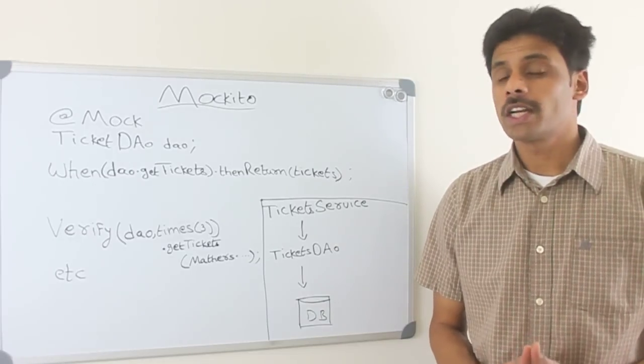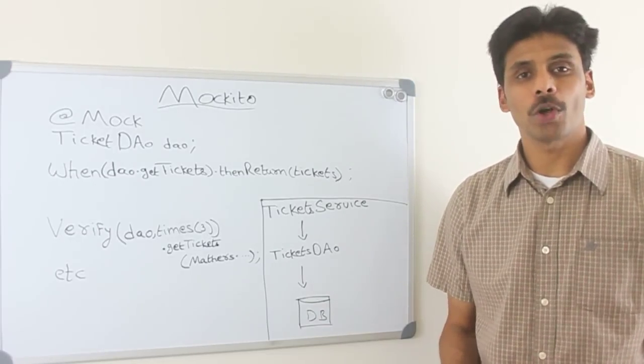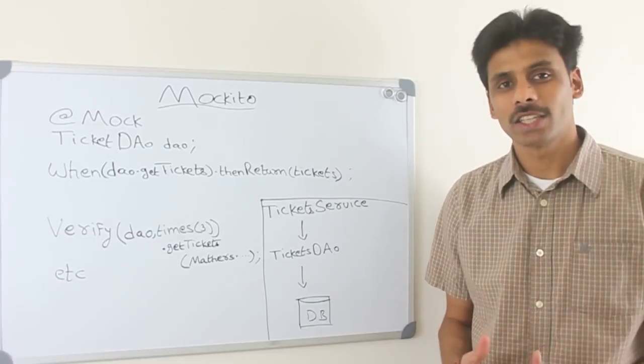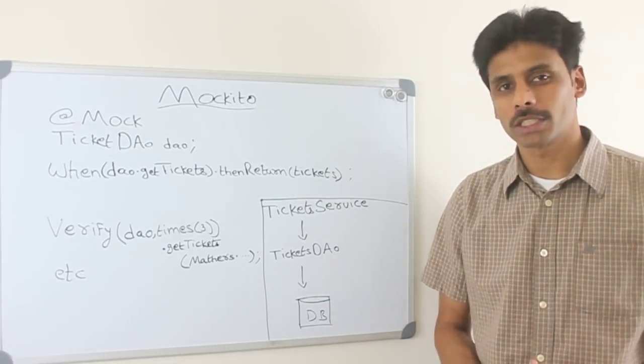When you are building object-oriented applications, you don't just put all your code in one single class. You distribute it across classes which then become objects at runtime.